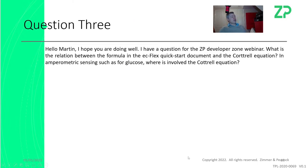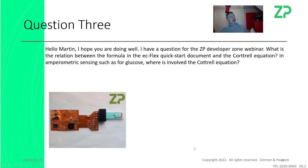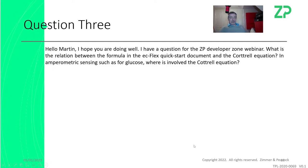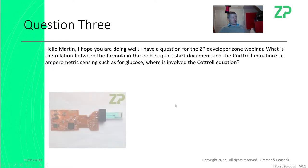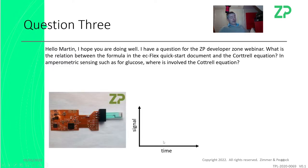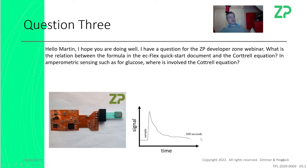Question three. The person has an EZ-Flex and describes their signal as a Cottrell-type response. I suspect the signal type they have is: sample goes on, the signal jumps up, but it's not stable — it's falling with time. So they have signal versus time. I've put 500 seconds here because if we're doing a CGM — continuous glucose monitoring — sensor, we often find the signal isn't settled until about 500 seconds.